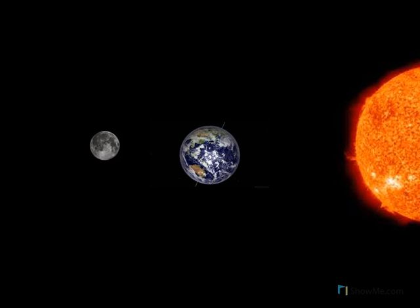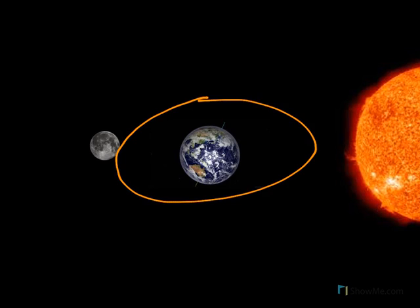The part of the Earth facing the Moon or Sun experiences high tides, such as in this diagram here, whilst the part facing away from the Moon and Sun experiences low tides.